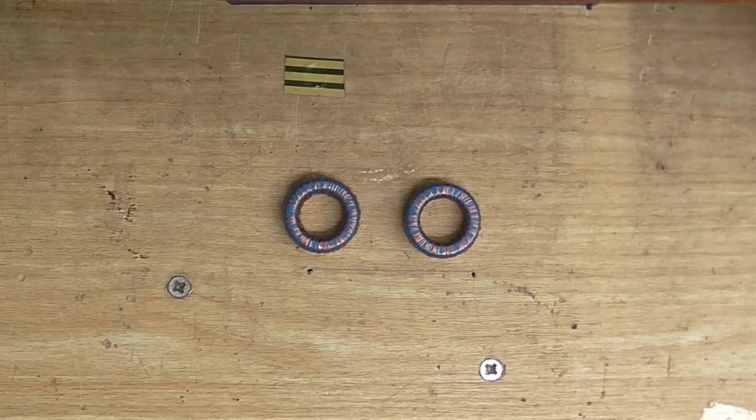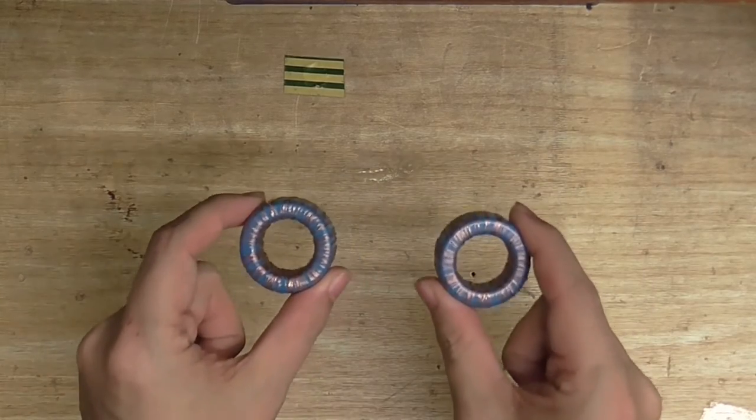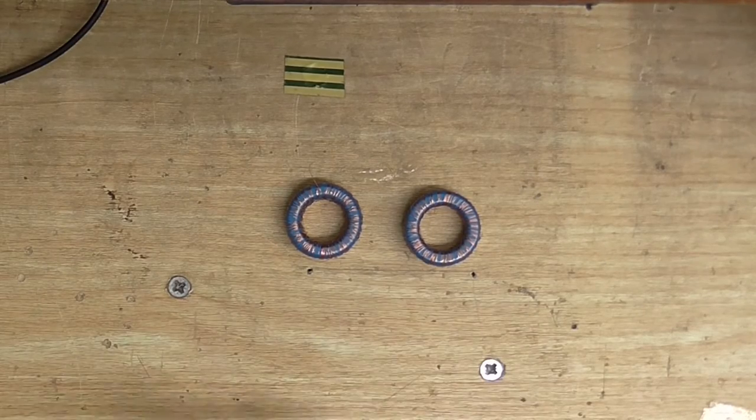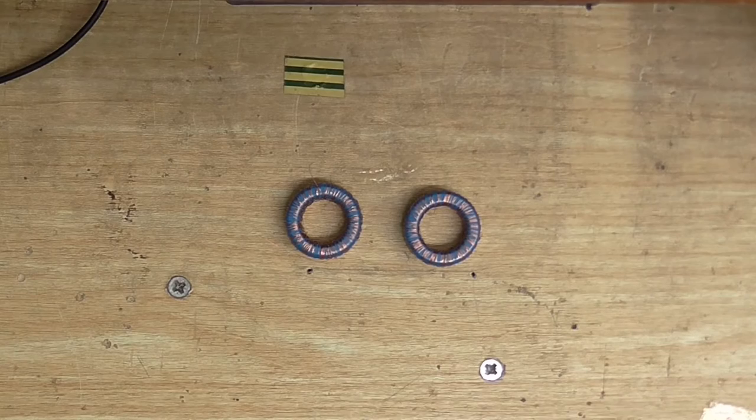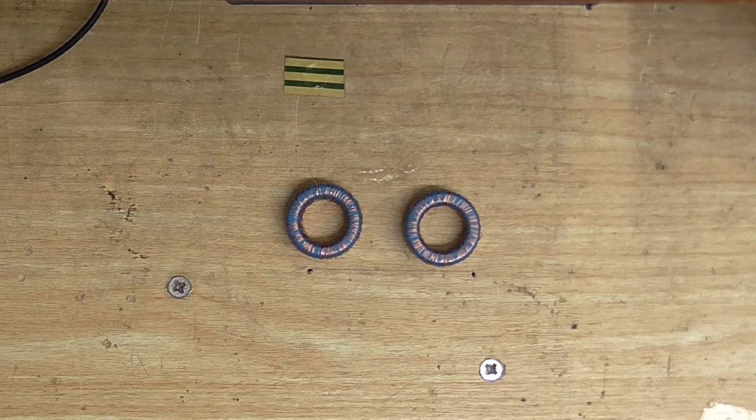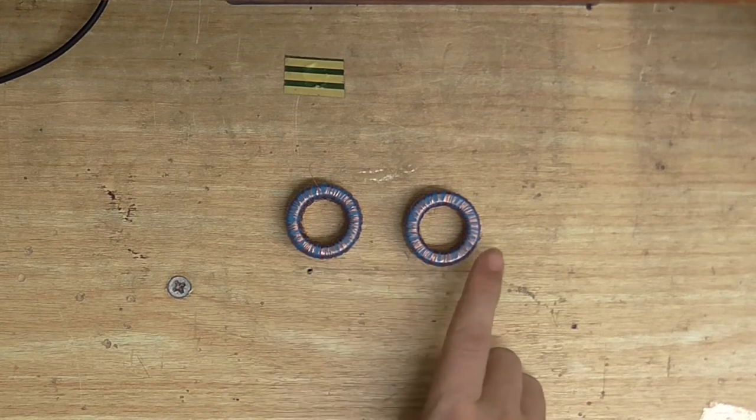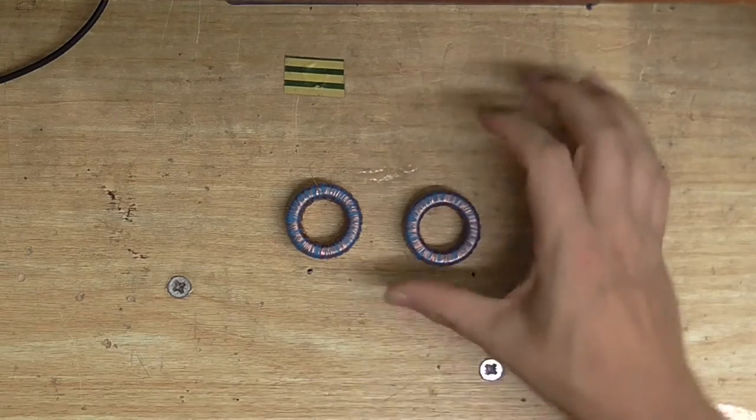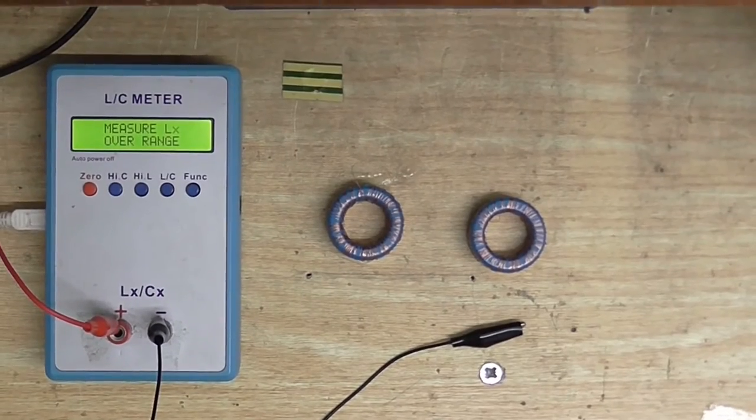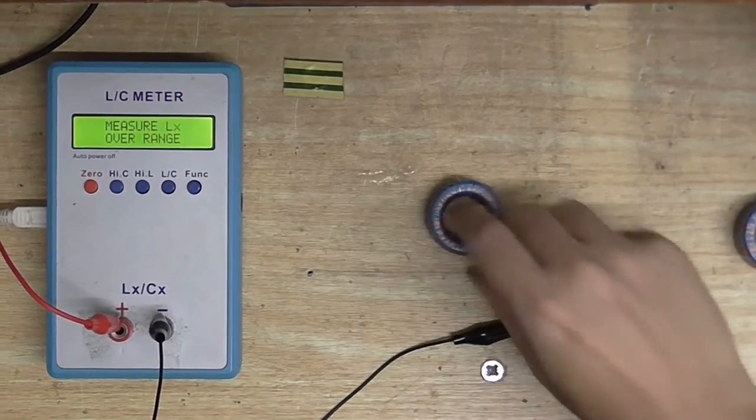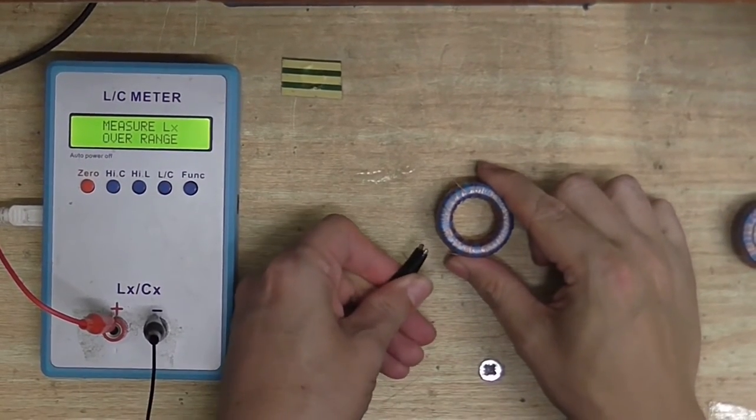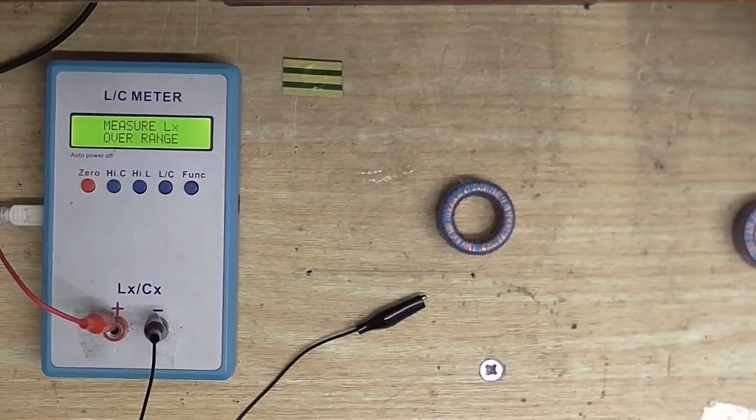So the first thing we need to do is I need to make sure that both of these have the exact same inductance. So I know these two are not perfect. There's going to be a little bit of difference between the two. There might be like 10 mH or something like that. So whichever one of these has more inductance, I will just take turns off until they both match. Right, so let's do this thing. I'm going to measure this one first. Let's see what its inductance is.